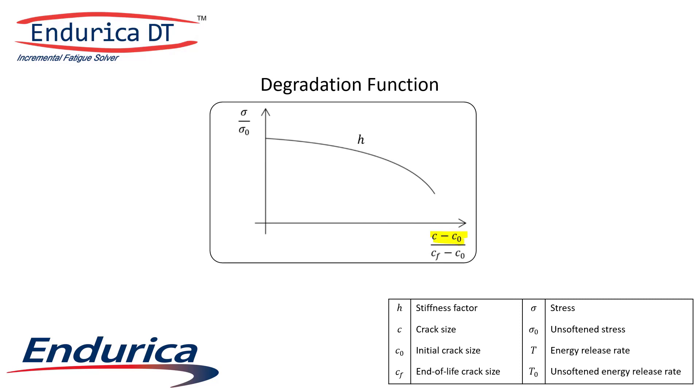The crack ratio on the horizontal axis will start at 0 and go towards 1 as the crack grows, while the stiffness ratio on the vertical axis will start at 1 and go towards 0. The stiffness ratio, H, scales the softened stress relative to the original, unsoftened stress.